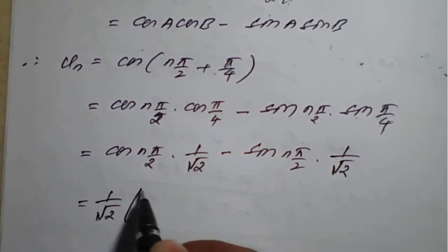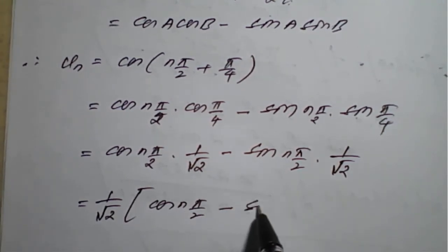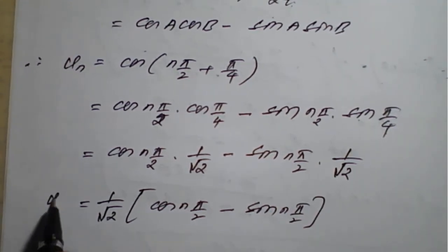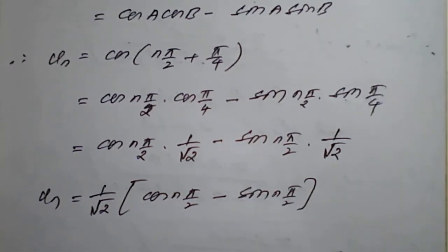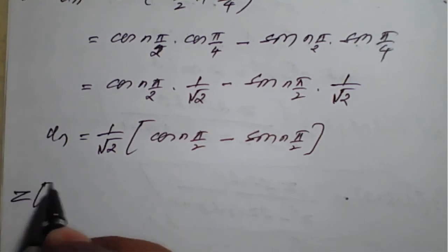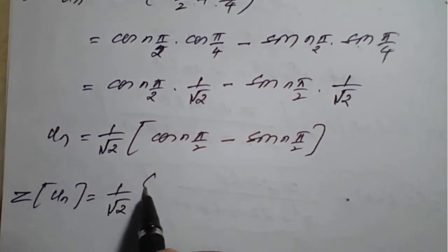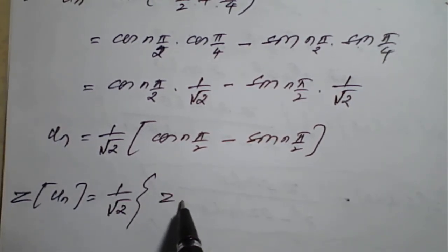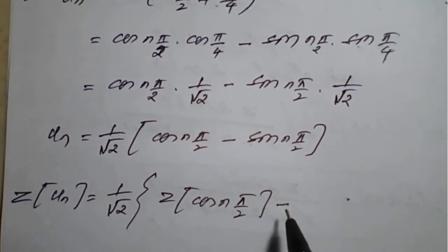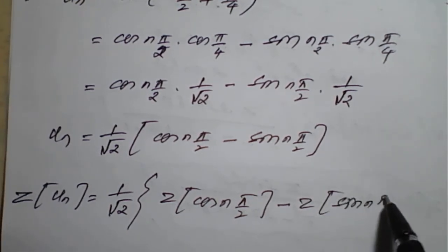Since 1/√2 is common from both terms, we take it outside. Therefore, u(n) = (1/√2)[cos(nπ/2) − sin(nπ/2)]. Now we take the Z transform on both sides: Z{u(n)} = (1/√2)[Z{cos(nπ/2)} − Z{sin(nπ/2)}].